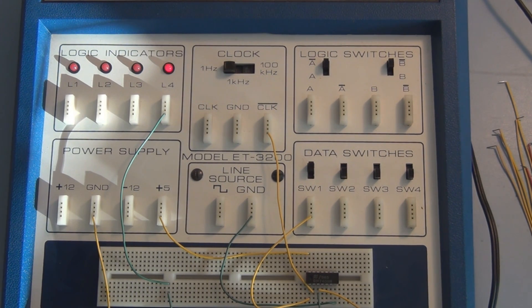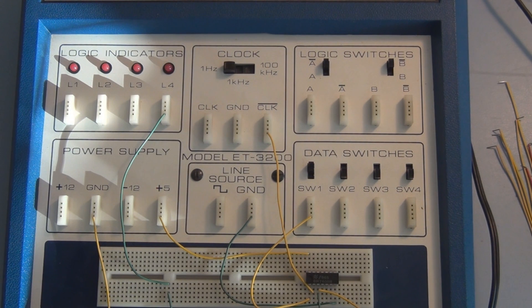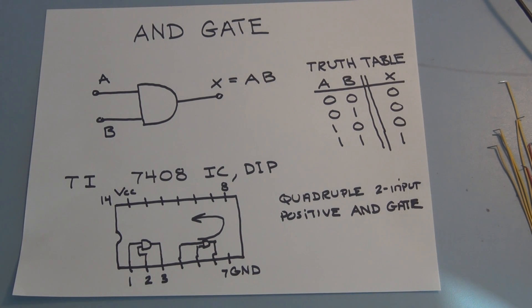We'll go over the theory on those three gates, and then we'll wire up all three gates with the help of this vintage Heathkit digital design experimenter. So the basic AND gate is a two-input device.